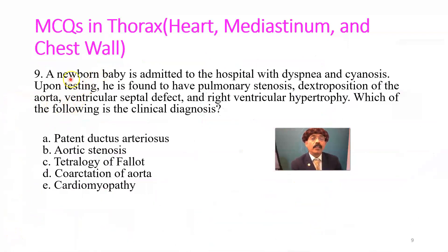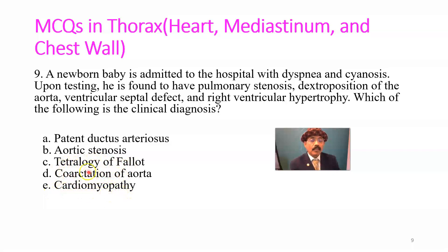Question number nine: a newborn baby admitted with dyspnea and cyanosis is found to have pulmonary stenosis, dextroposition of the aorta — which is always associated with overriding of the aorta — ventricular septal defect, and right ventricular hypertrophy. These four problems together constitute the tetralogy of Fallot. Answer is C.